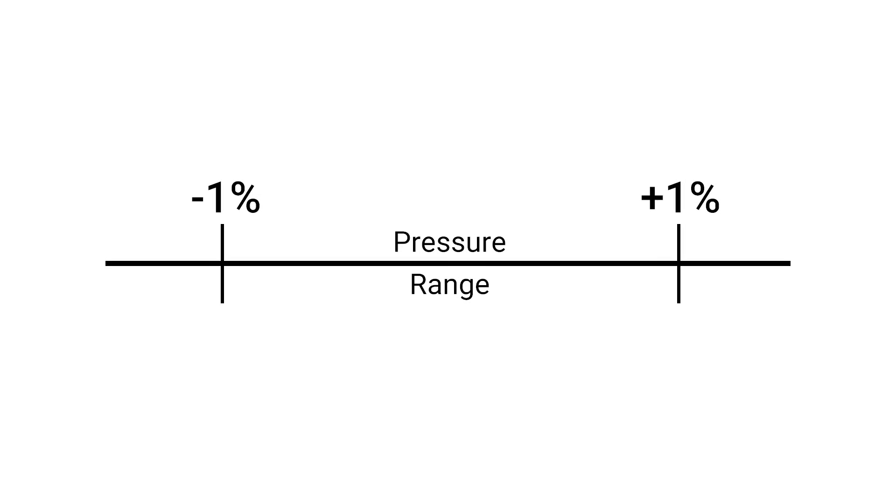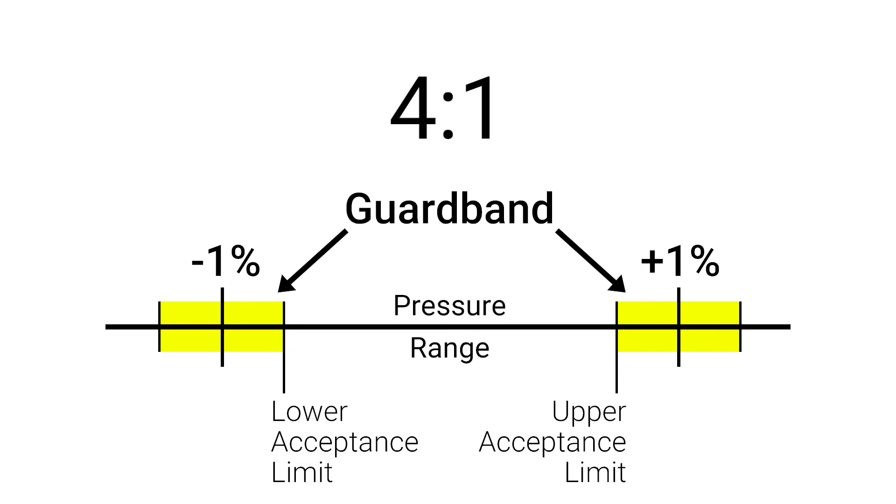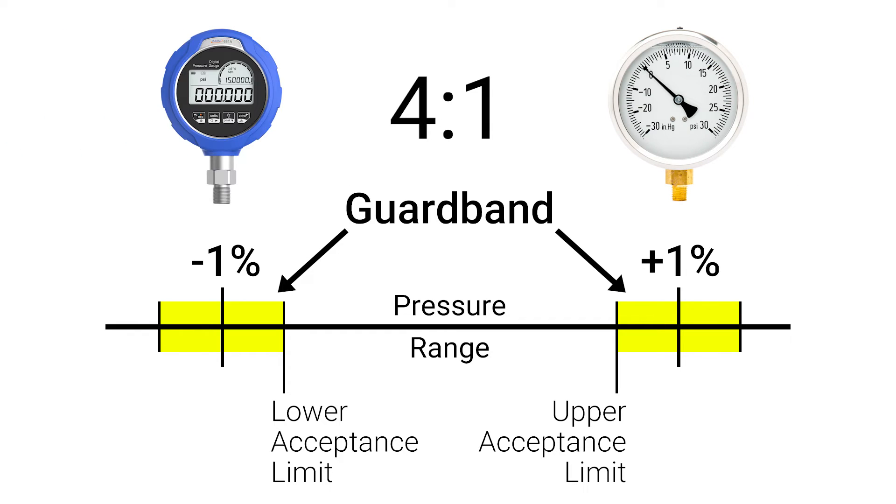Within the specified accuracy range are upper and lower acceptance limits for pass or fail decisions. The difference in these limits to their respective specifications is called the guard band, which may change depending on the accuracy ratio between the test device and the reference standard.